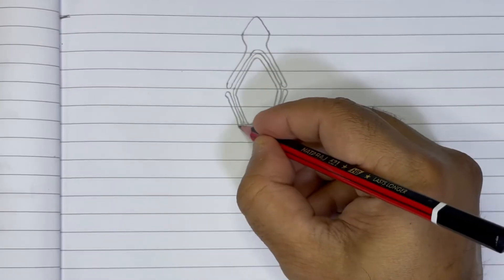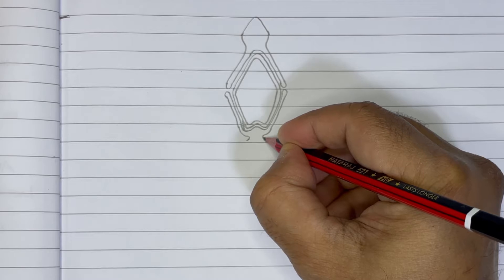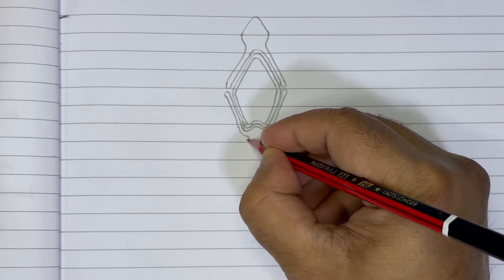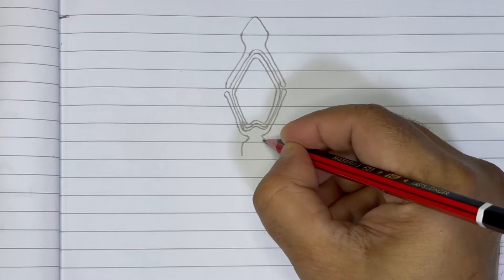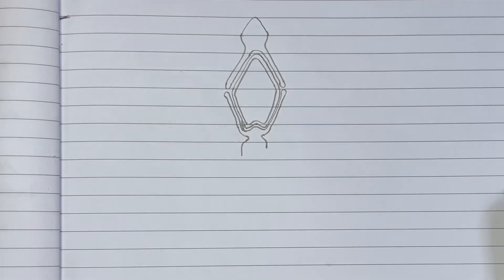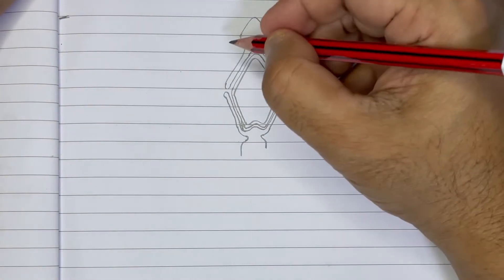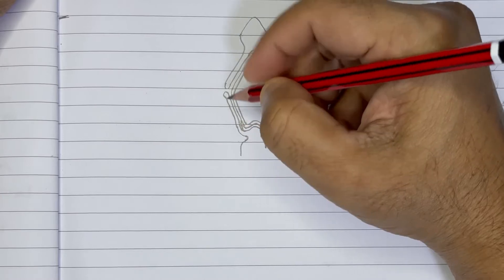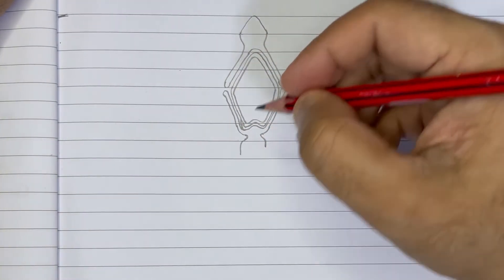Then bringing the other end also till here. Once we reach, we just make a small notch here and there we start the middle piece. So this much done. Now we are supposed to draw the plasma membrane.